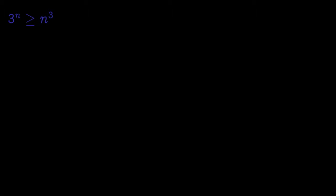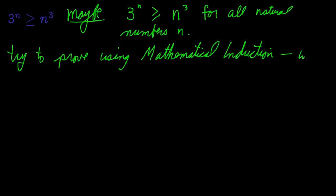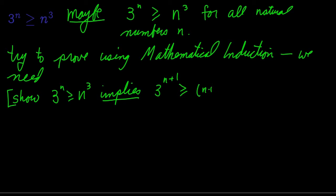Let's change our claim and say 3 to the n is greater than or equal to n cubed for all natural numbers. We'll try to prove this using mathematical induction. We need to show two things. First, we need to show that whenever the claim is true for some natural number n, it must also be true for the next natural number n plus 1.